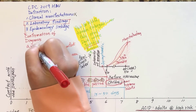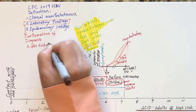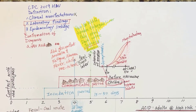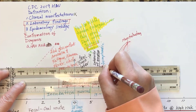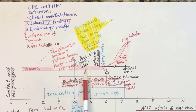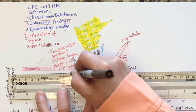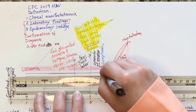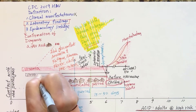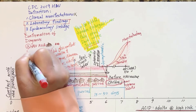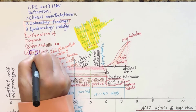Presence of hepatitis A viral RNA in either stool or blood confirms this infection. Hepatitis A viral RNA can be found in the blood within a week after exposure, and can be detected in stool roughly a week after exposure. It peaks at about two weeks before the onset of jaundice and gradually disappears within a week after the onset of jaundice.